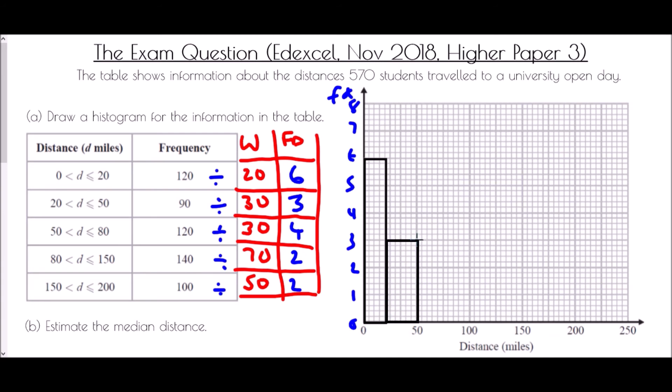Next we want to go from 50 to 80 so that's 6 squares across and that needs a height of 4. And then from 80 to 150 with a height of 2, and then from 150 to 200 again with a height of 2 and we've completed our histogram.